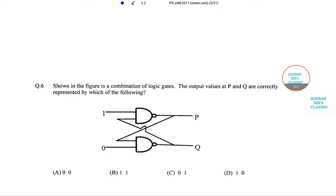Now, where have I picked this question from? I have picked this question from the JAM 2017 paper physics. This has appeared in section A and was marked as question number 6. Let's read this first. The question is: Shown in the figure is a combination of logic gates. The output values at P and Q are correctly represented by which of the following? Four options are given.